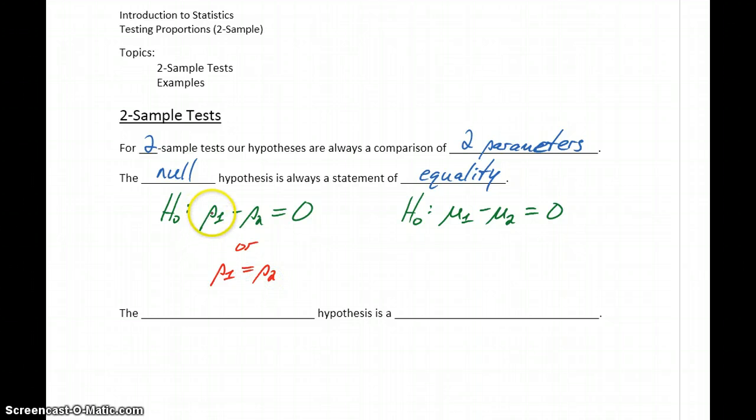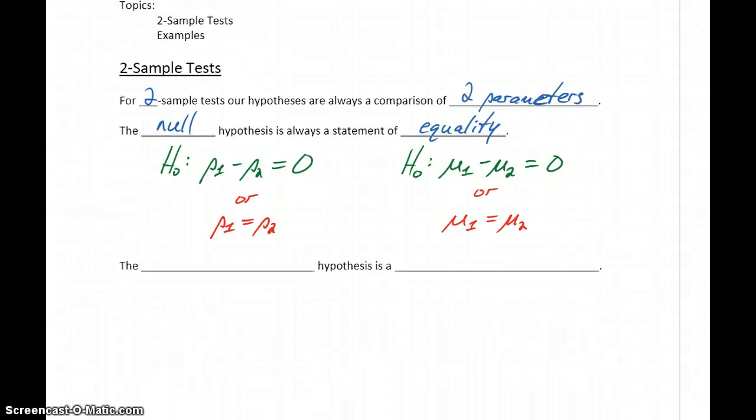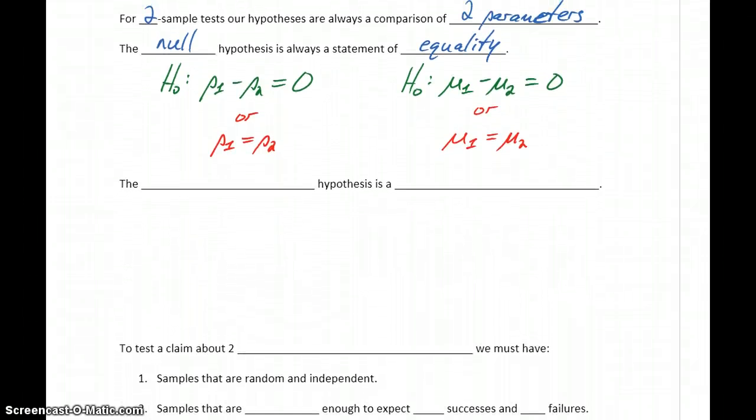So StatCrunch is going to have us formulate our hypotheses in this form. But essentially what we're testing or what hypothesis we're constructing here is a statement saying that the two population proportions are exactly equal to each other. Or with our two means, we're saying that mu1 is equal to mu2. So testing claims about two samples, we're always starting off with the assumption that our two parameters are exactly equal to each other.